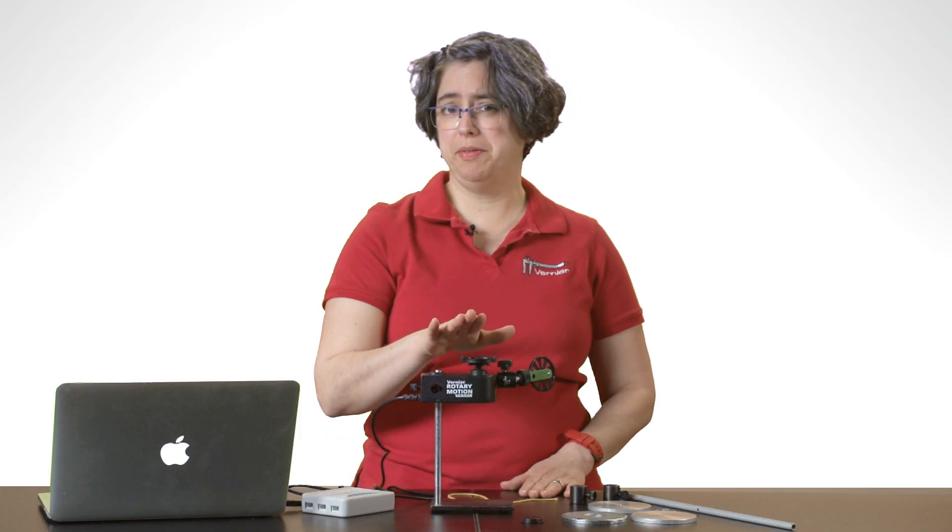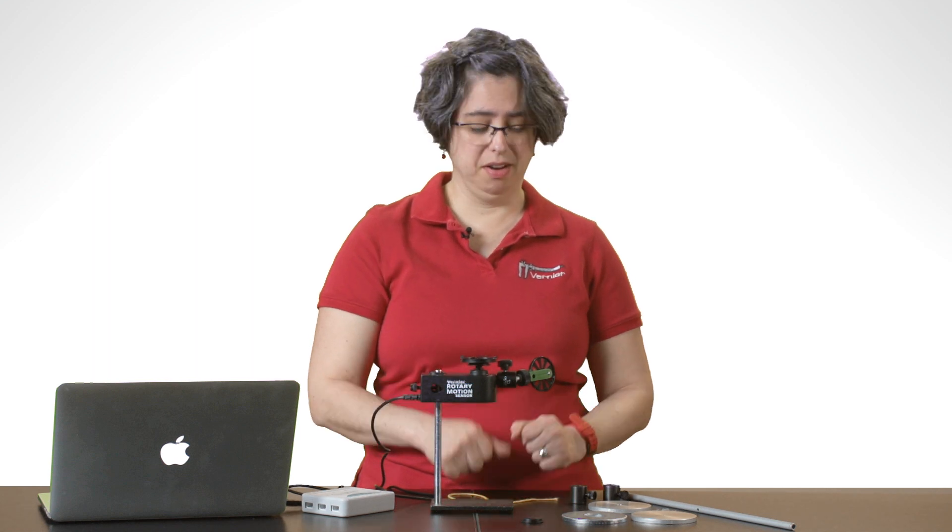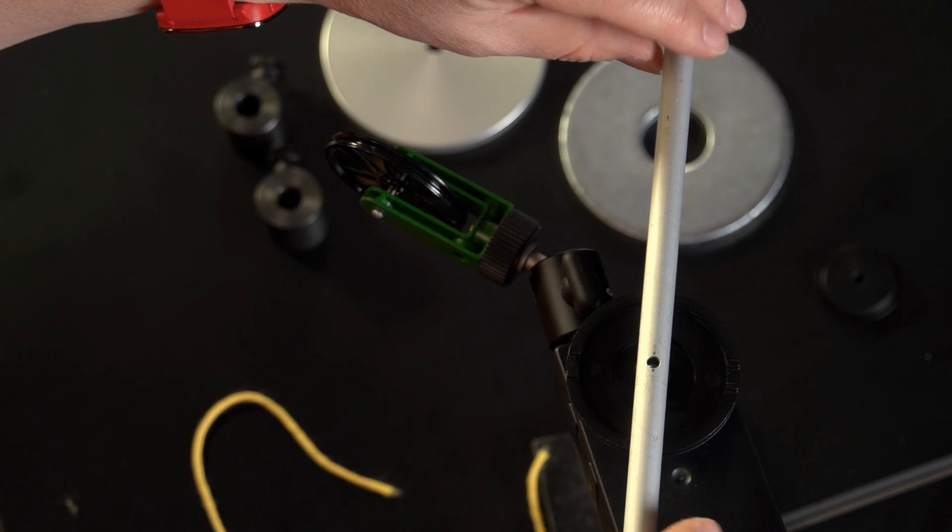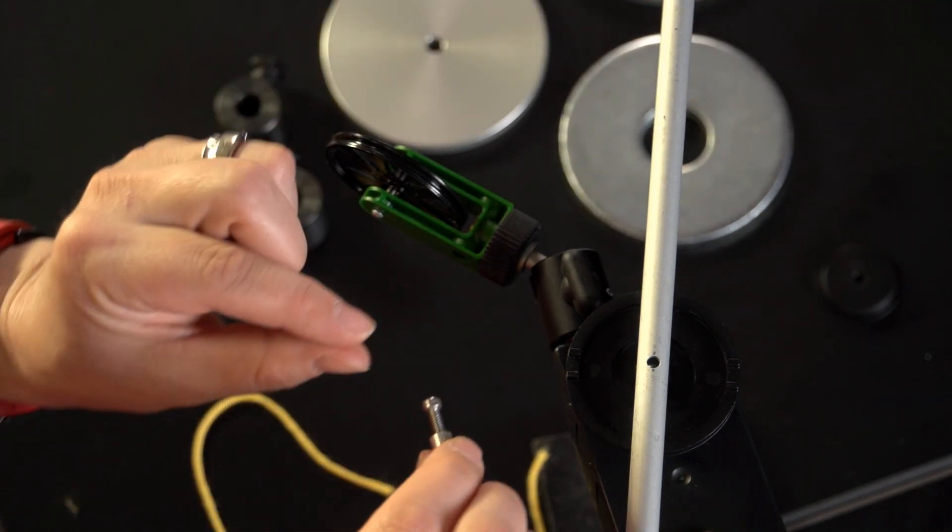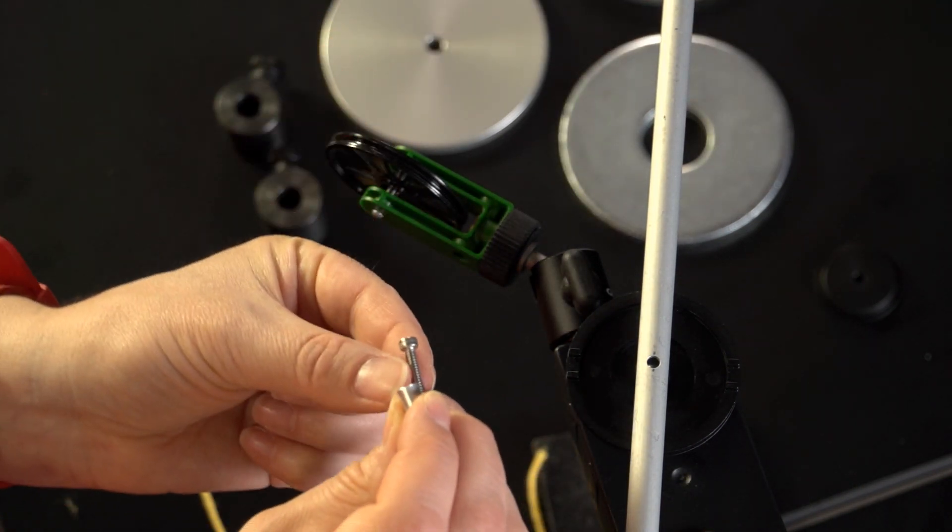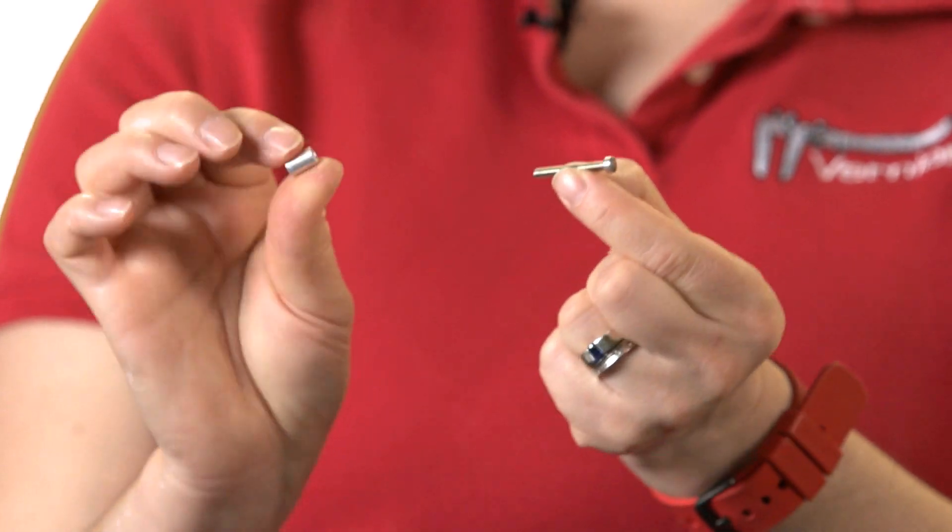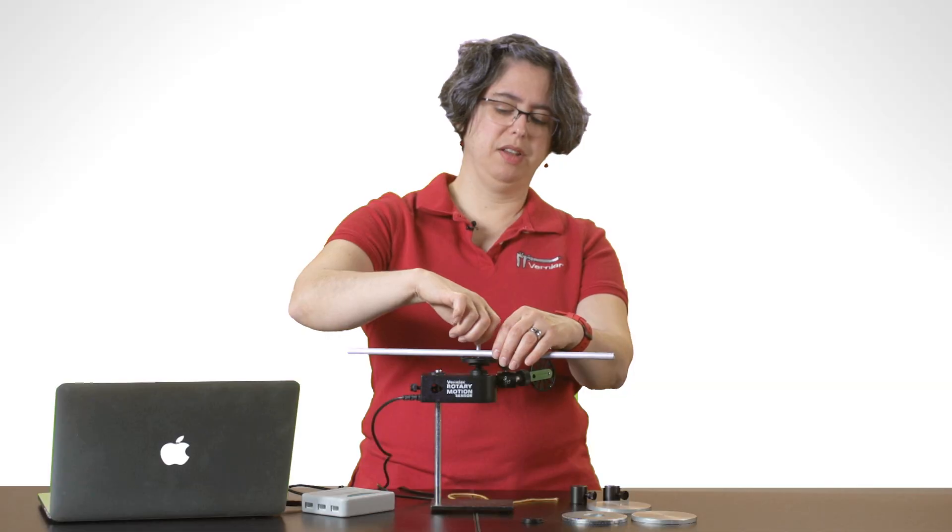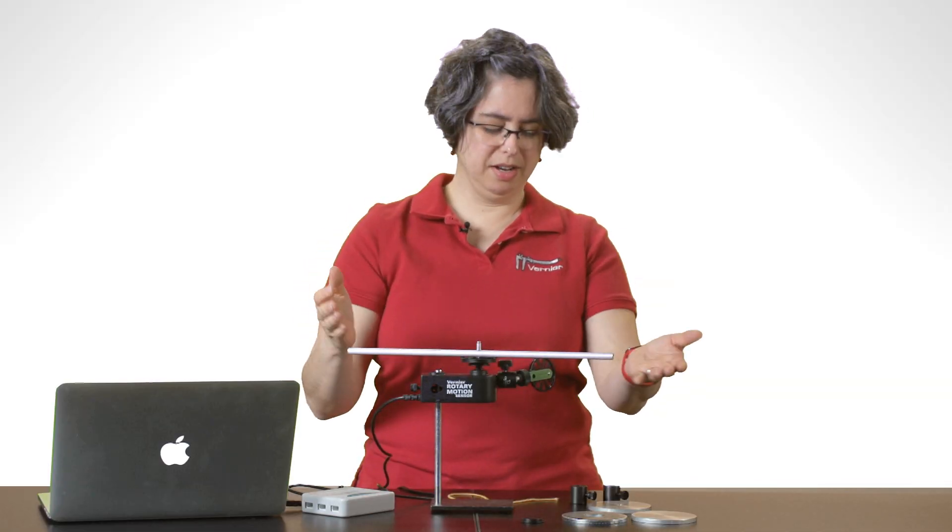So you're going to want to put various attachments on here. For example, to find the moment of inertia of a point particle, you're going to use this accessory rod. And for that, you'll need this screw with its collar or sleeve. Put that together. So I can just use my fingers to tighten it up.